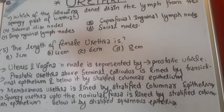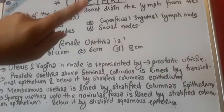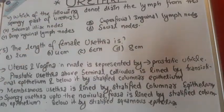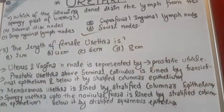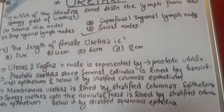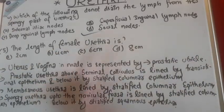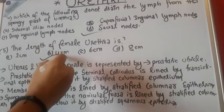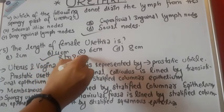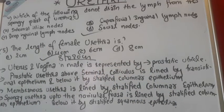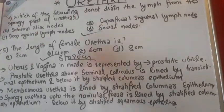Question four asks: which of the following does not drain lymph from the spongy part of the urethra? The answer is sacral nodes — they do not drain. The internal iliac, inguinal, and superficial inguinal lymph nodes do drain lymph from the spongy part of the urethra. Question five: the length of the female urethra is 4 centimeters, whereas in males it is 8 to 20 centimeters. The female urethra is shorter, which is why females get more urinary tract infections.